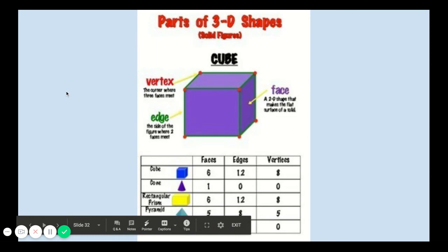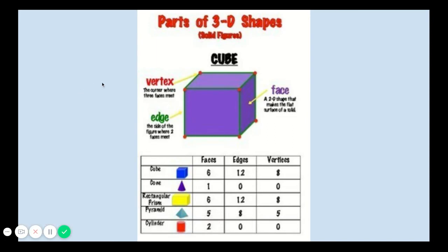When we are describing the parts of 3D shapes, we have a face, the flat part or the 2D shape, an edge, the side of the figure where the faces meet, and the vertex, the corner where three faces meet.